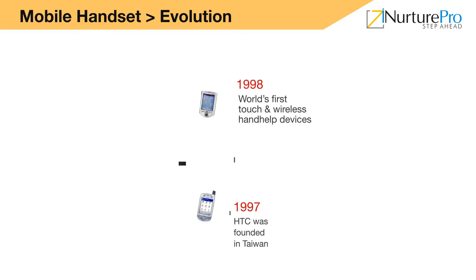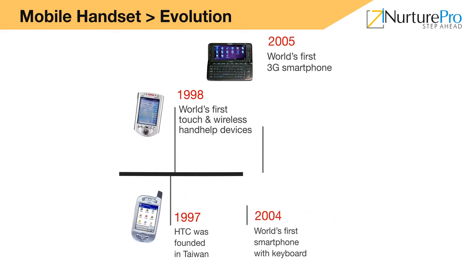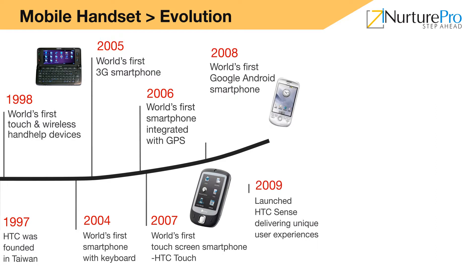1997: HTC was founded in Taiwan. 1998: World's first touch and wireless handheld devices. 2004: World's first smartphone with keyboard. 2005: World's first 3D smartphone. 2006: World's first smartphone integrated with GPS. 2007: World's first touchscreen smartphone, HTC Touch. 2008: World's first Google Android smartphone. 2009: Launch of HTC Sense 3M, delivering unique user experiences.